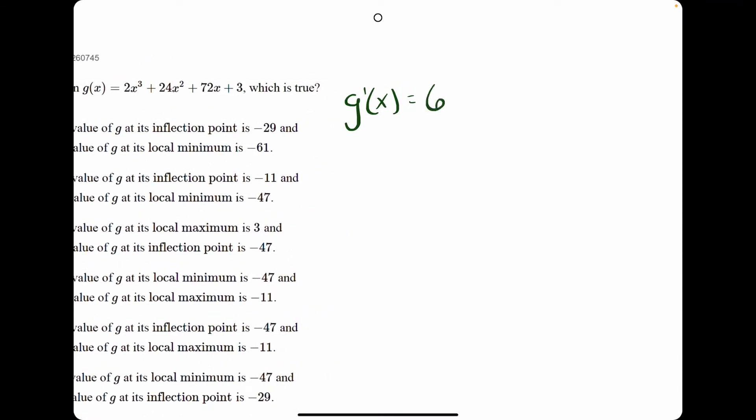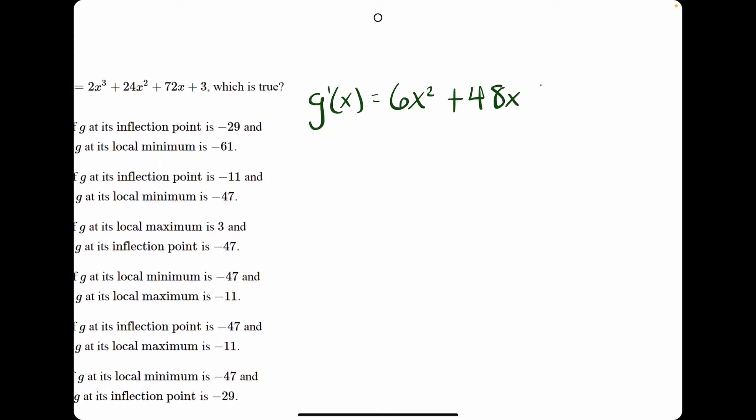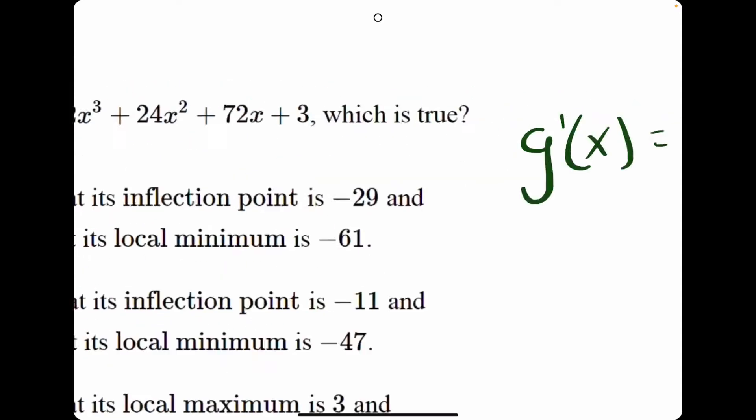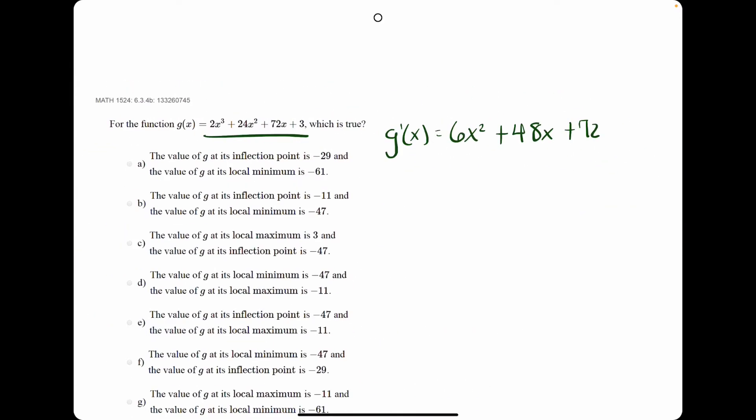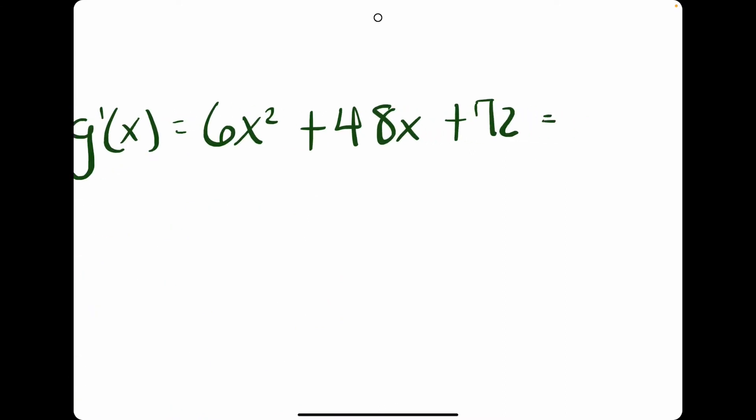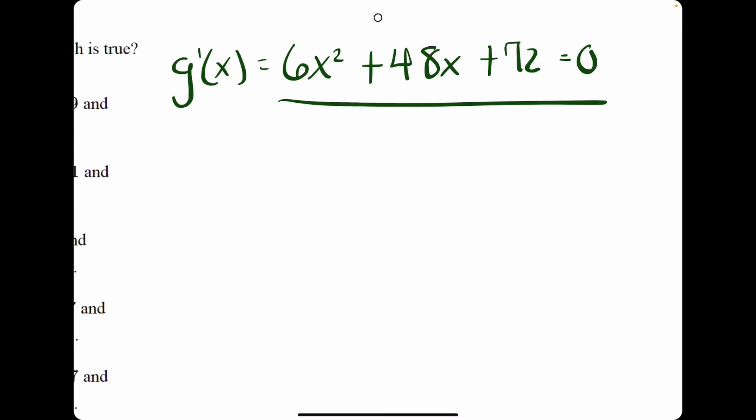Without further ado, the first derivative is 6x squared plus 48x plus 72. I just found the derivative of this original function g. The next step is setting this derivative equal to 0 and factoring.